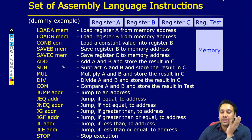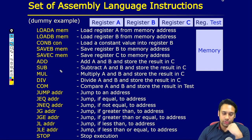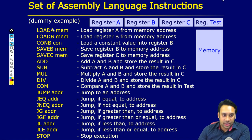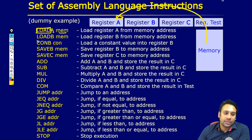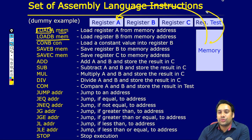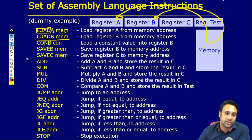You can understand the assembly code — how can we represent it, and what do we use? If we use assembly code, 'load a memory' means loading memory data to register A. Similarly, 'load B memory' means whichever memory address we provide, that data goes into register B.